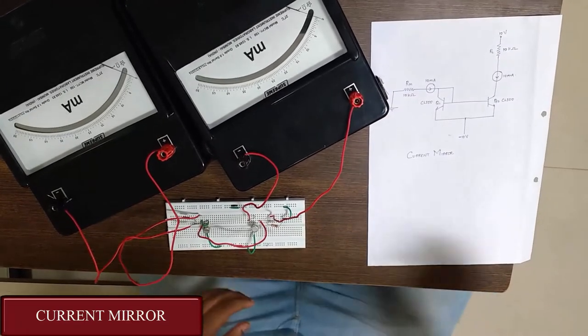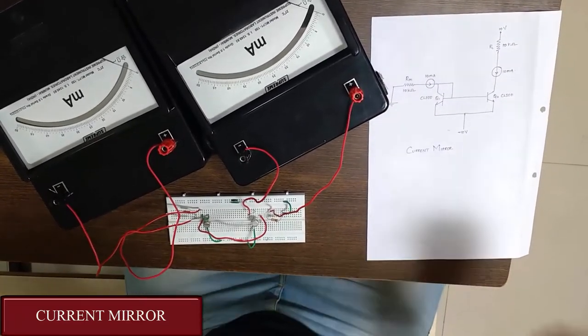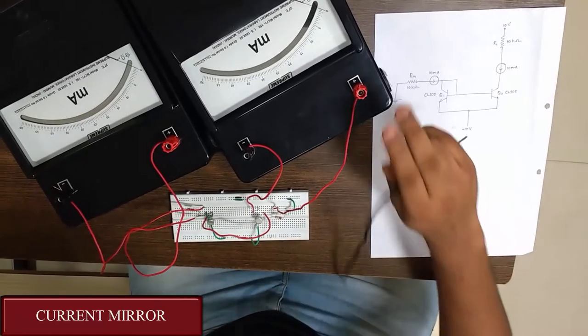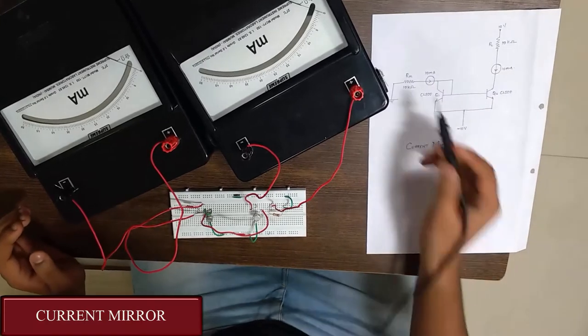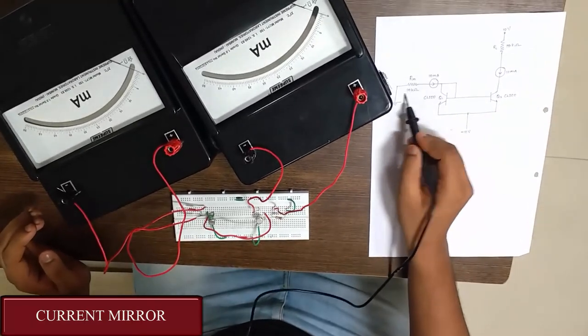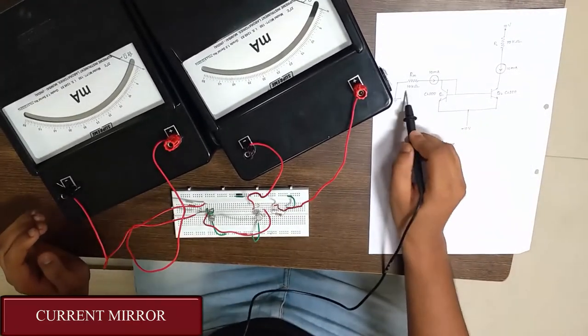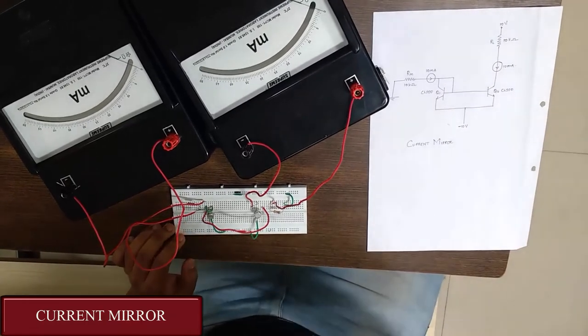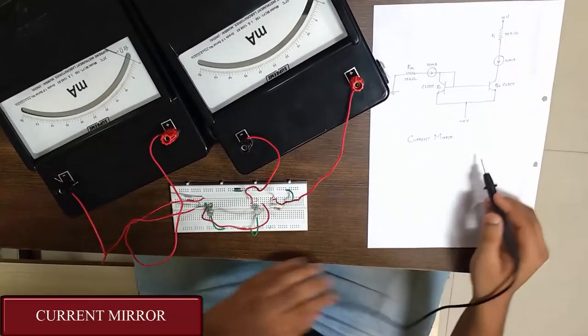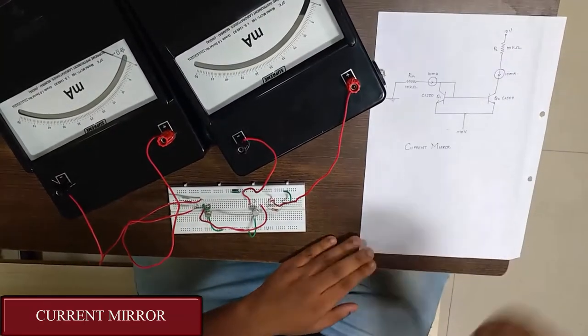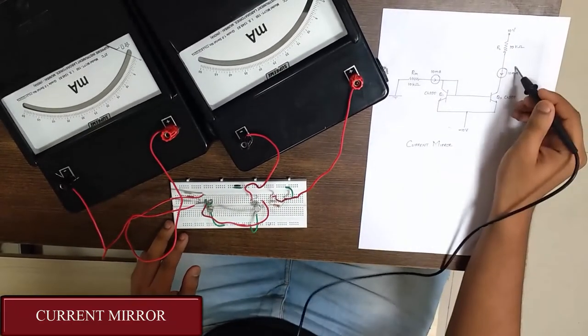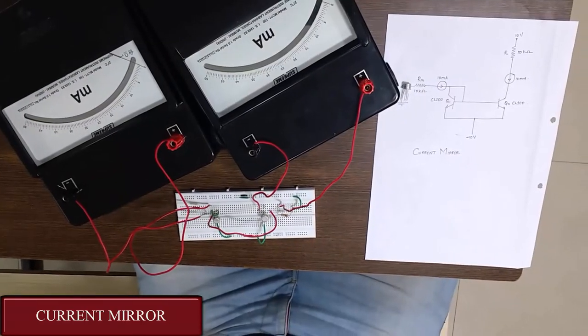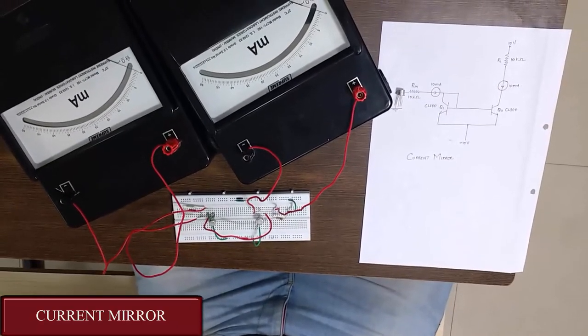So now in order to see the input and output we have milliammeters. This milliammeter gives us the input current and this milliammeter gives us the output current. There is a one 10K resistor which is grounded at the output and since it was dual power supply the plus 10 volt is given at the 10K of the input signal and both the emitters of the transistor are given minus 10 volts.